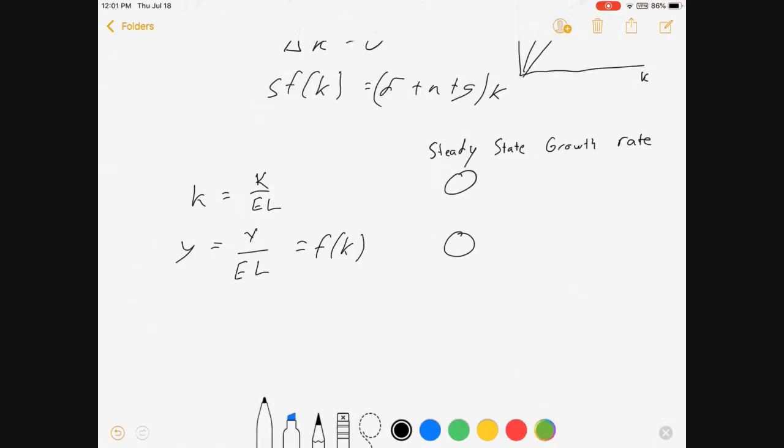But our output per worker, which is just y over L, this is the one that sort of measures, this is our GDP per capita or something. This is our aggregate measure of well-being.